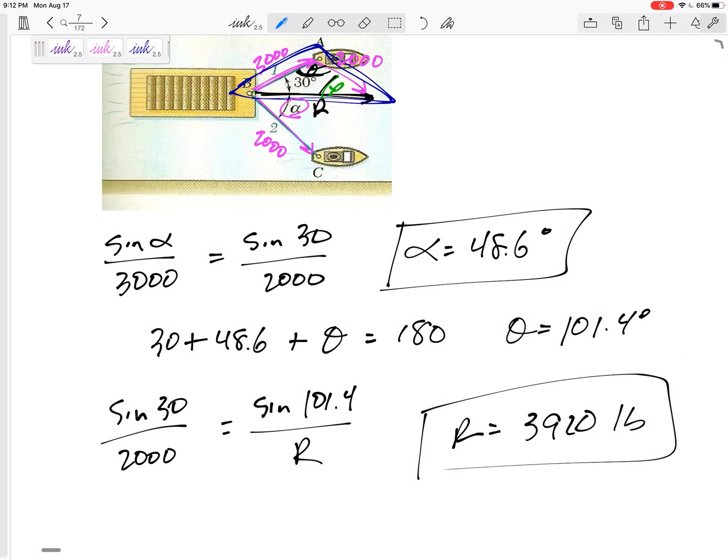And so that's what it asks for. It asks for, this isn't the angle for R. This is the angle alpha that barge BC pulls it. And then the magnitude, when you add them together, it's traveling horizontally at 3920 pounds.